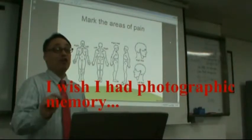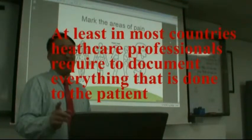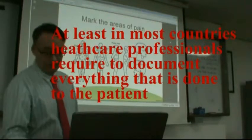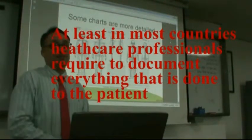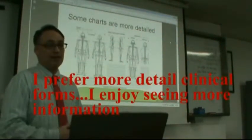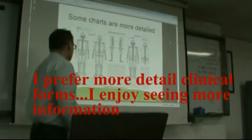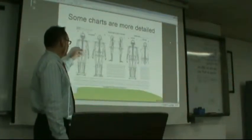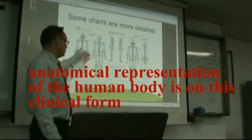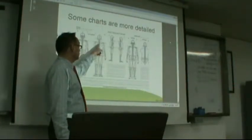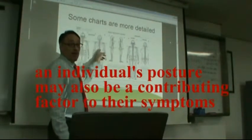Legally, you have to write everything down and sign everything — the law requires it. Here's a more detailed chart. Some people don't like it because they have to write more, but I like it because it shows the relationship of posture, the hips, the shoulders, the skeletal system, and the levels of the spine: cervicals, thoracics, and lumbars.